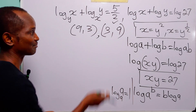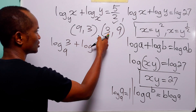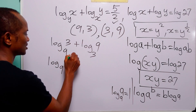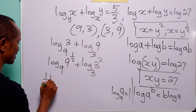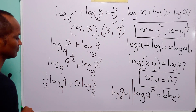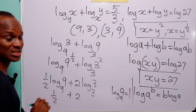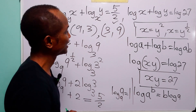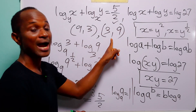Almost the exact same thing happens for the second point (x equals 3, y equals 9): log to base 9 of 3 plus log to base 3 of 9 equals log to base 9 of 9 to the half plus log to base 3 of 3 squared, which gives one half times 1 plus 2 times 1 — that is one half plus 2 — which equals 5 over 2. So the two solutions are (x, y) equals (9, 3) and (x, y) equals (3, 9).